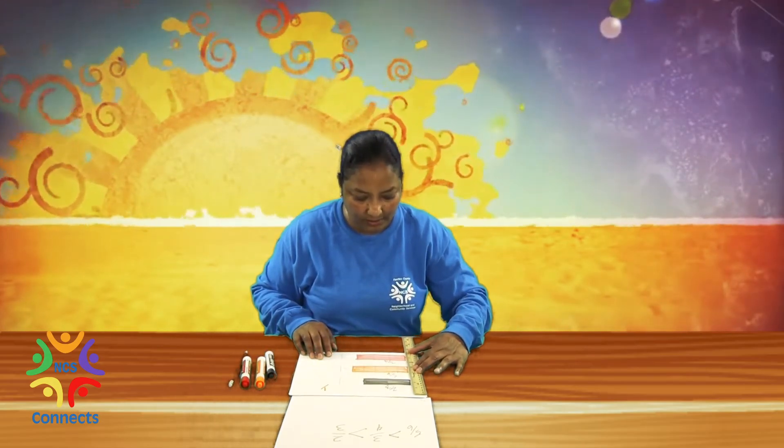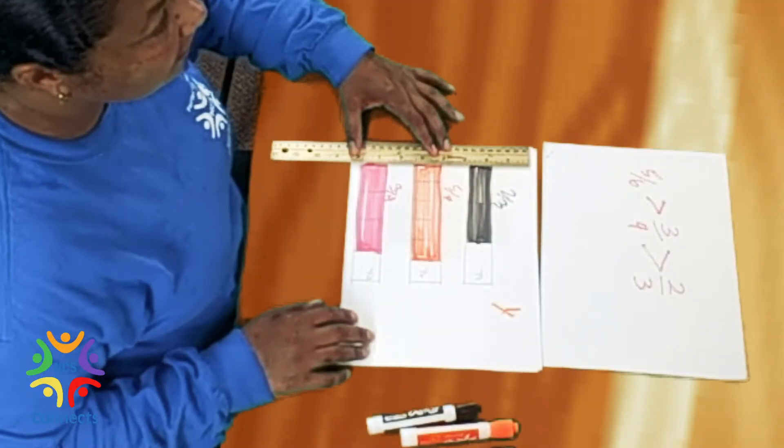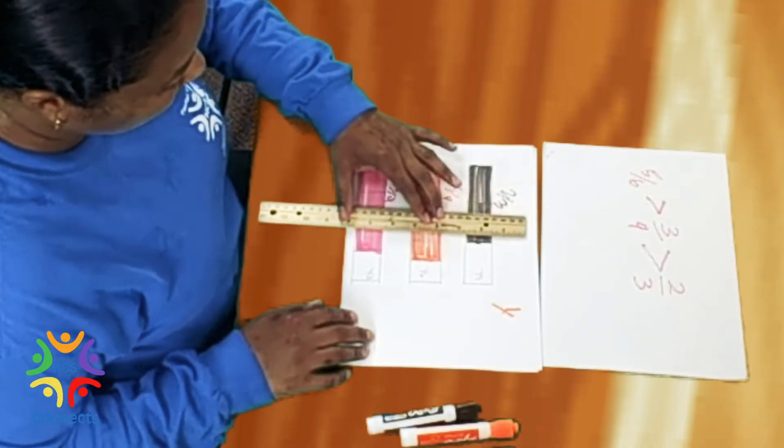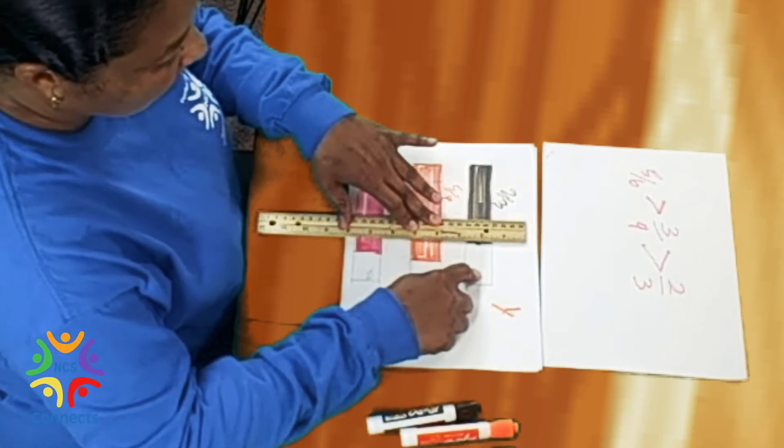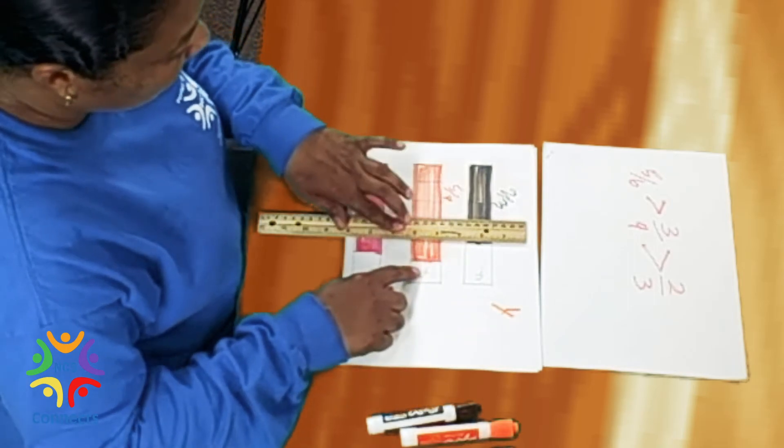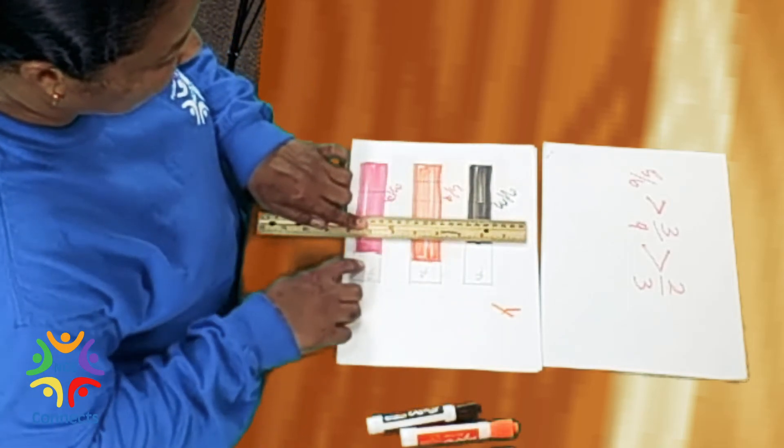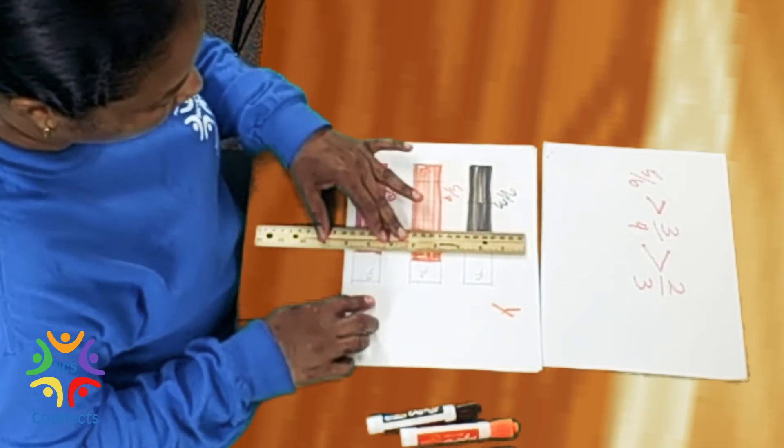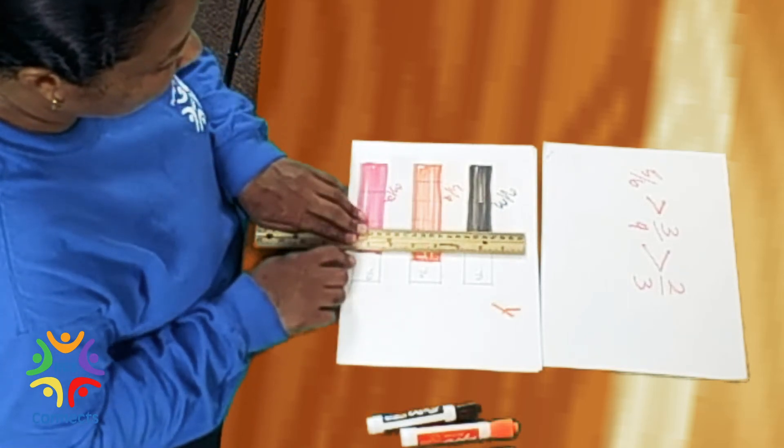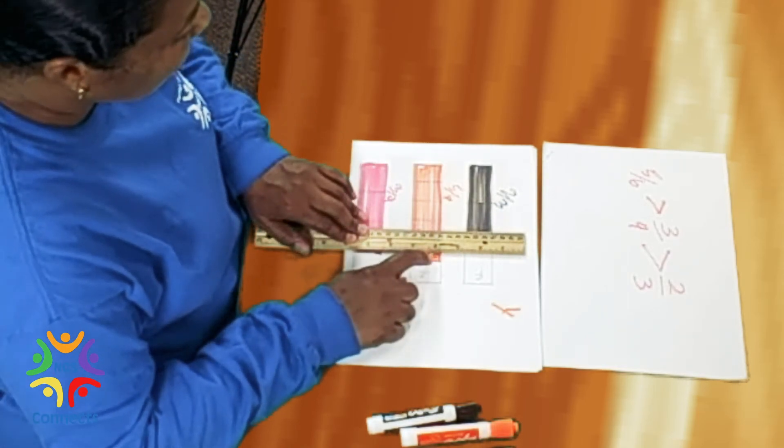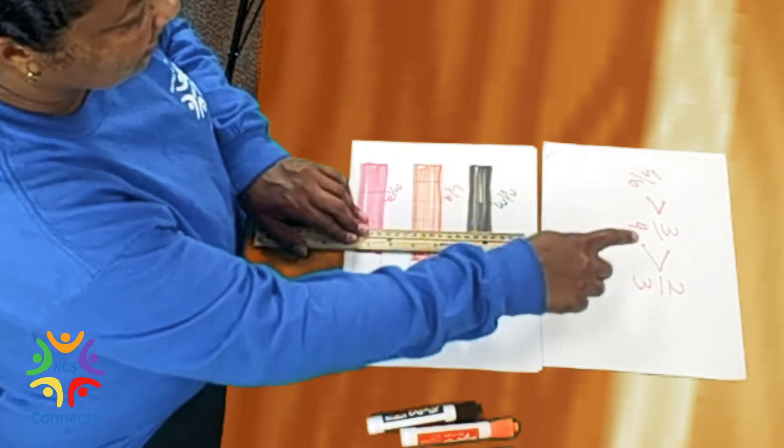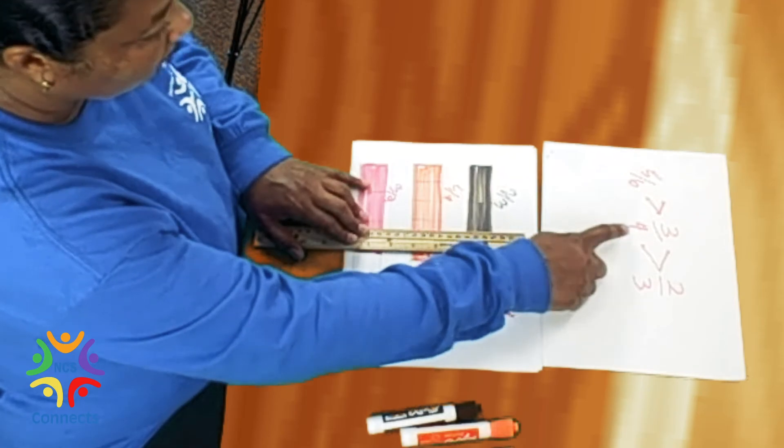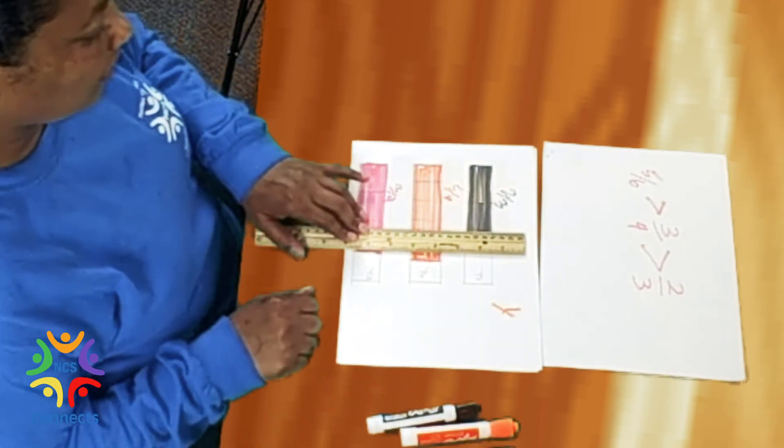One more time. Here we go. And as you can see, we know that two-thirds is less than five-sixths and less than three-fourths. You go here and you realize that the three-fourths is less than five-sixths. So we know that as a conclusion, five-sixths is greater than three-fourths and it's greater than two-thirds.